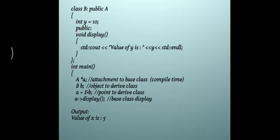Both class A and class B have the same prototype for void display — so we are overriding the function. In main, we create a base class pointer. That pointer automatically gets attached to base class functions and data members at compile time, which is static binding.